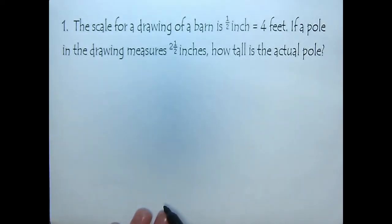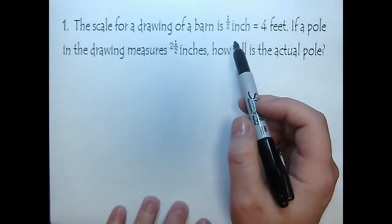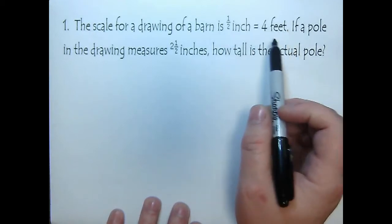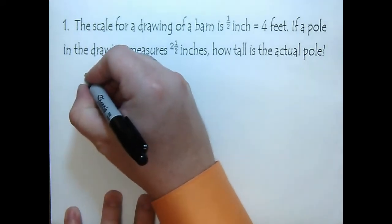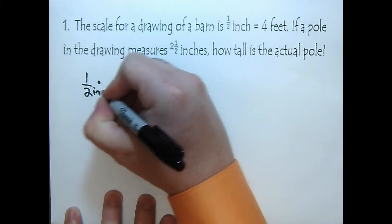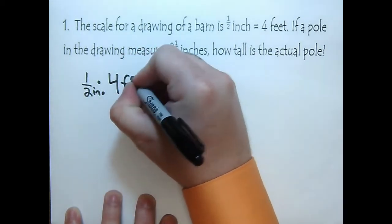For a scale problem, the first thing we want to do is set up our proportional relationship. Our proportional relationship means we need to have two quantities set up as a ratio. So we have one half inch equals four feet. So that's one half inches to four feet.